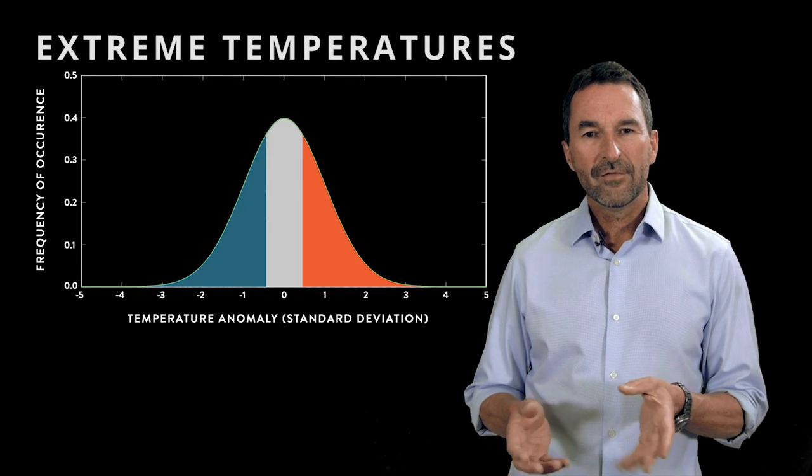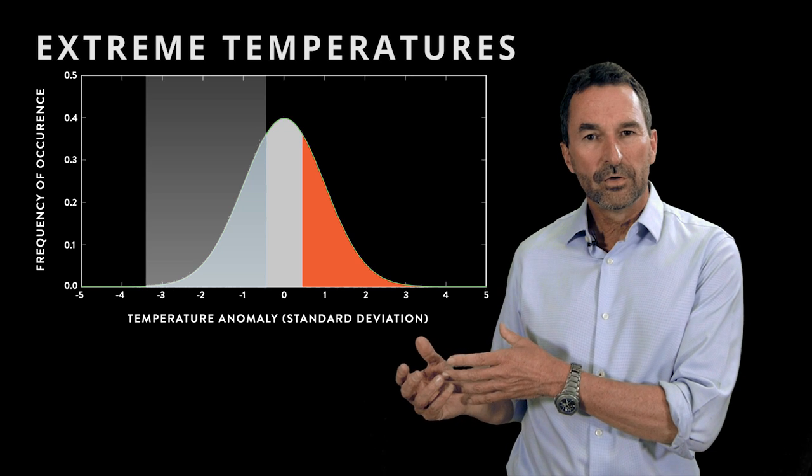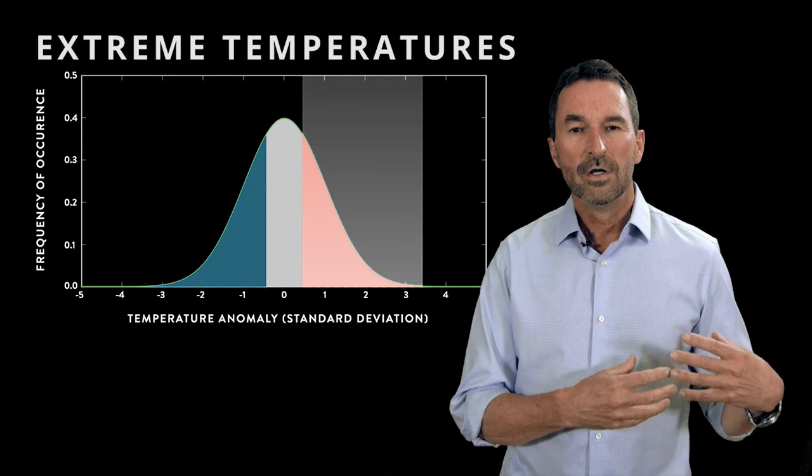Under normal weather, we have about one-third, one in three years, are a little bit colder than usual, one-third are normal, and one-third are a little bit warmer than usual.